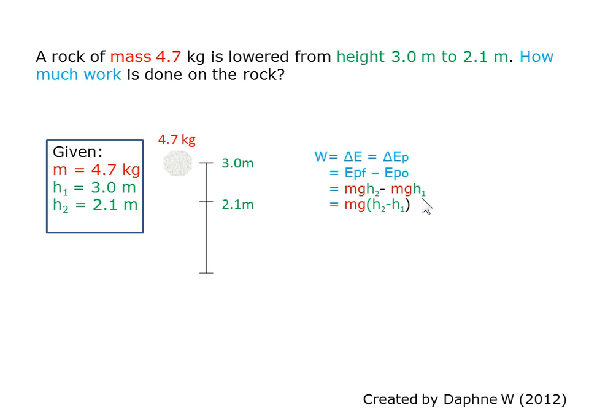And since energy is measured as mass times gravity times the height, we end up with mass times gravity times the difference in the two heights.